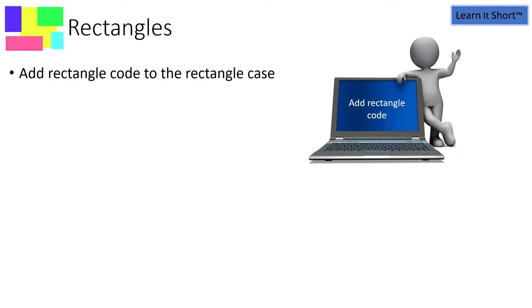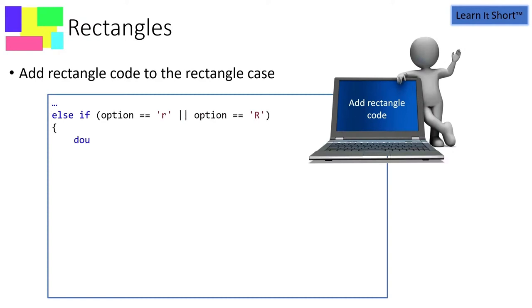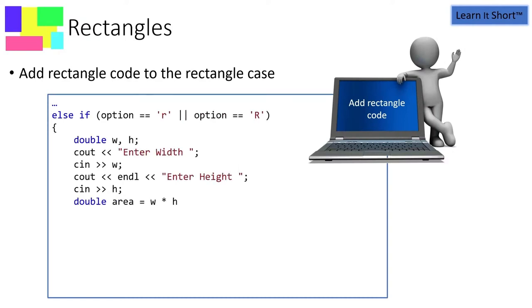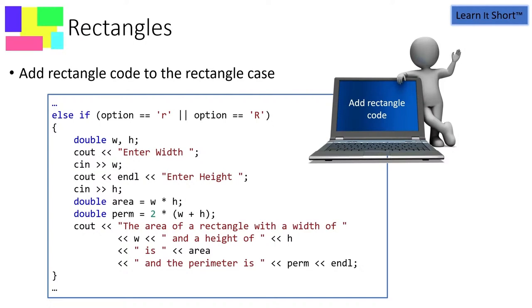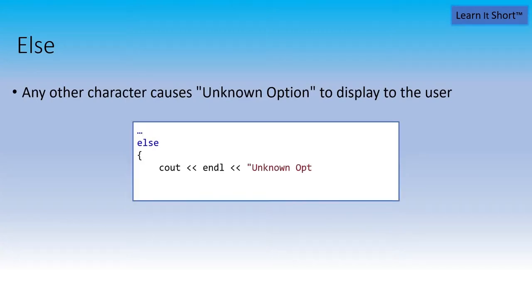Let's go ahead and add the code for the rectangle case, very similar. So under the block for the else if for rectangle, we'll declare variables to hold the width and height, prompt the user for that information, calculate the area and the perimeter, and then output the results to the end user. And finally, that final else in our sequence of decision making, that will be our unknown option. Here, we'll display that to the end user to let them know that we didn't understand what it was they asked us to do.